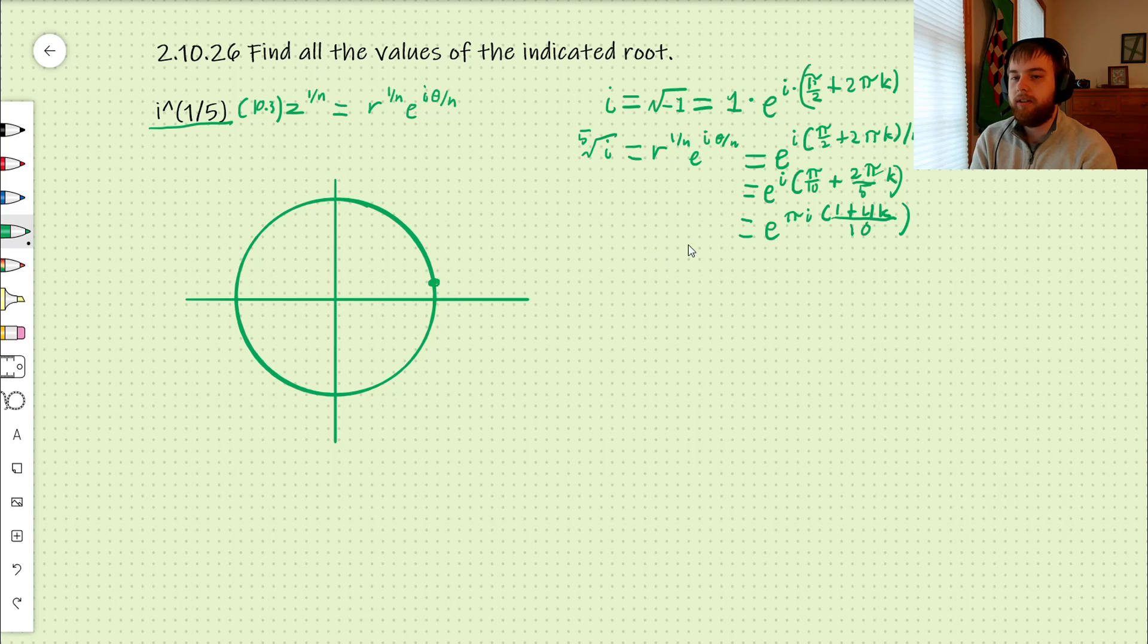The next one is 5 over 10, which is pi over 2, which gives us this here. Our next one is 9 pi over 10, which is almost half of a circle.